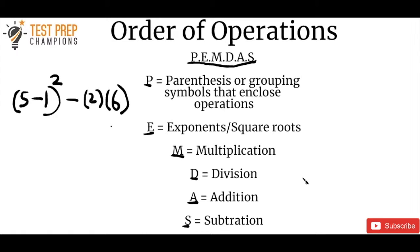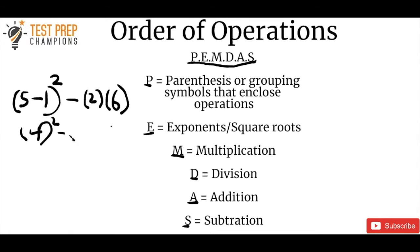Exponents and square roots are treated the same way, and then come multiplication, division, addition, and subtraction. So to solve a problem using PEMDAS, we start with what's inside the parentheses. We don't start with 2 and 6 since those are just in parentheses to show multiplication. We start with 5 minus 1, which gives us 4. We then rewrite the problem as 4 squared minus 2 times 6.